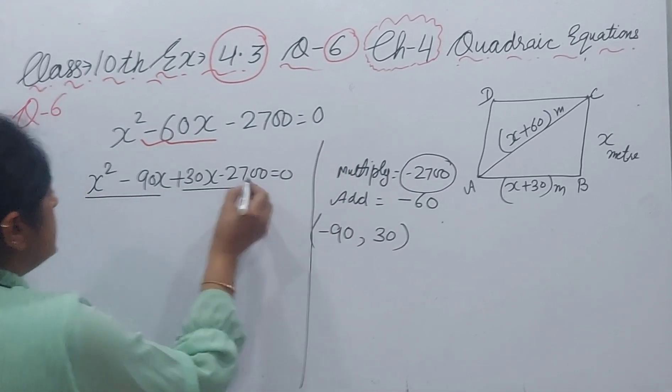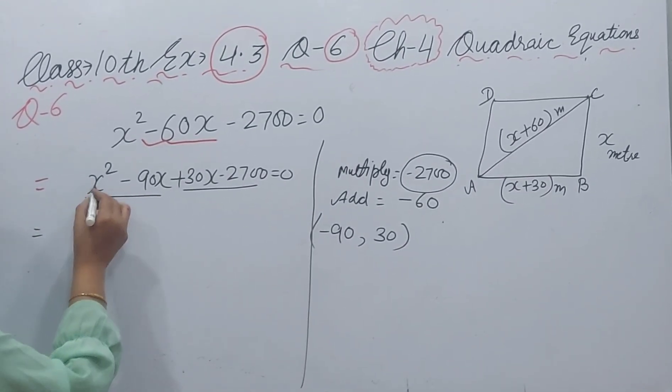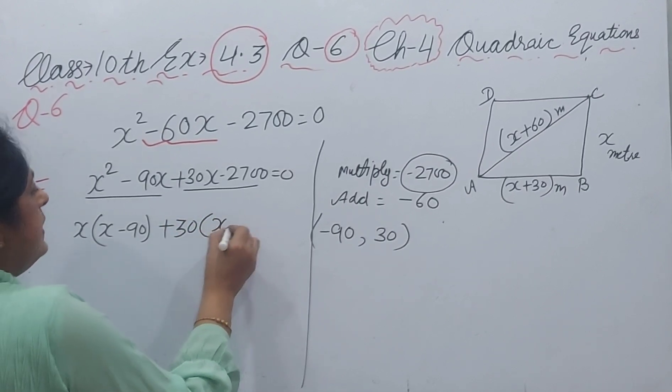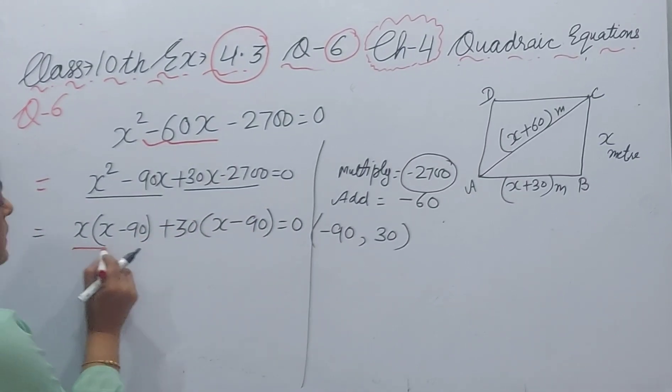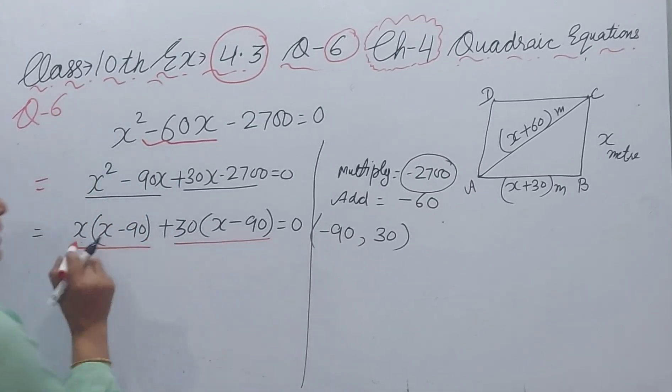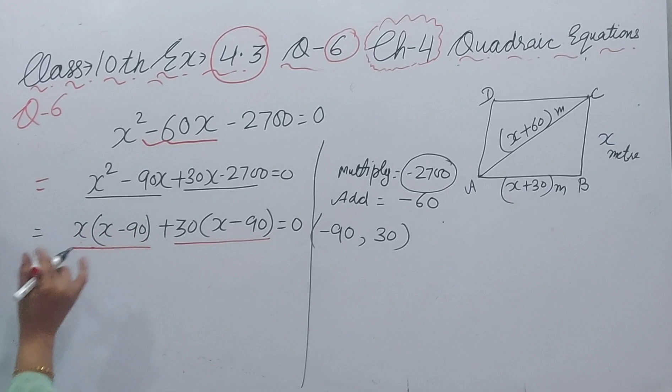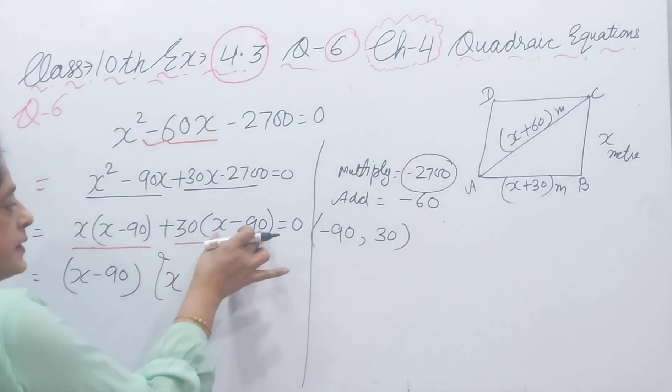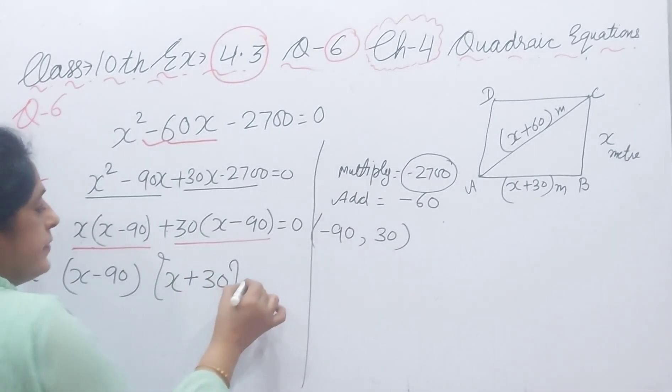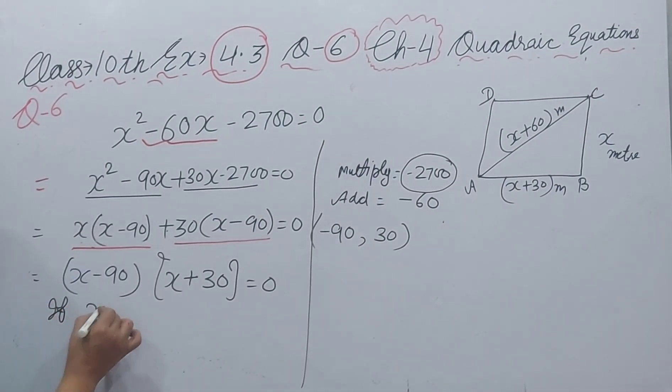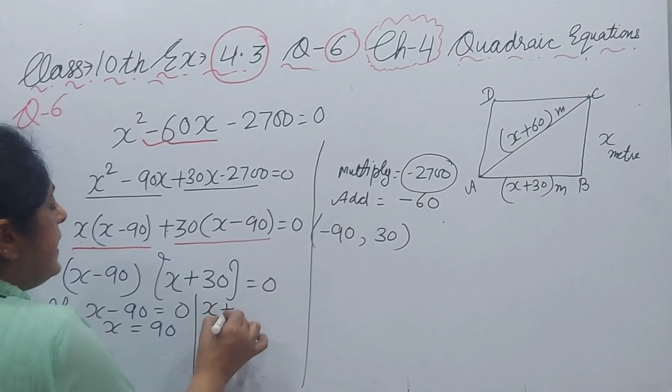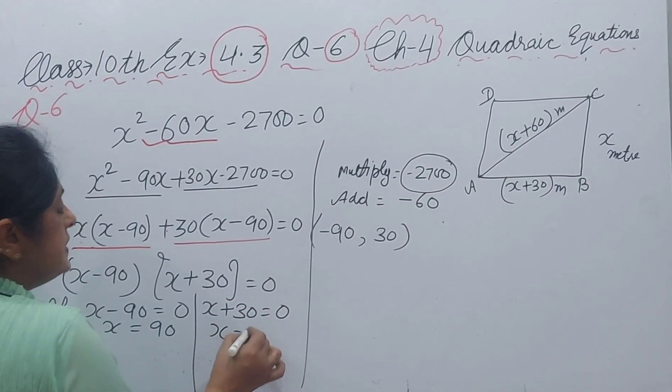In these two terms and in these two terms, here X is common. Here X will left minus 90, and here you take 30 as a common and X minus 90 will left. Now, you see these two terms are multiplied and these two terms are multiplied and between the plus sign, and here X minus 90 is common. So X minus 90 you take outside. Here internal X will left, this is outside, same sign and 30 left. If X minus 90 is 0 then X is 90, and if X plus 30 is 0, X is equal to minus 30. This 30 will come in right hand side and sign will be changed.